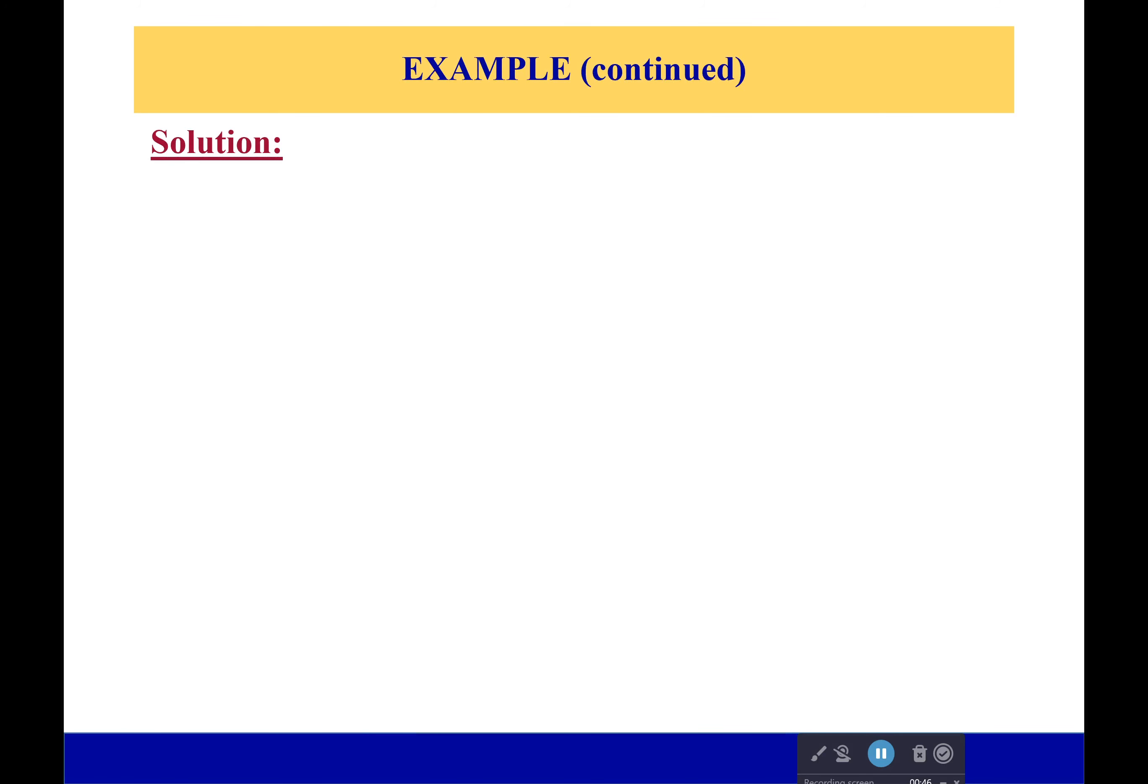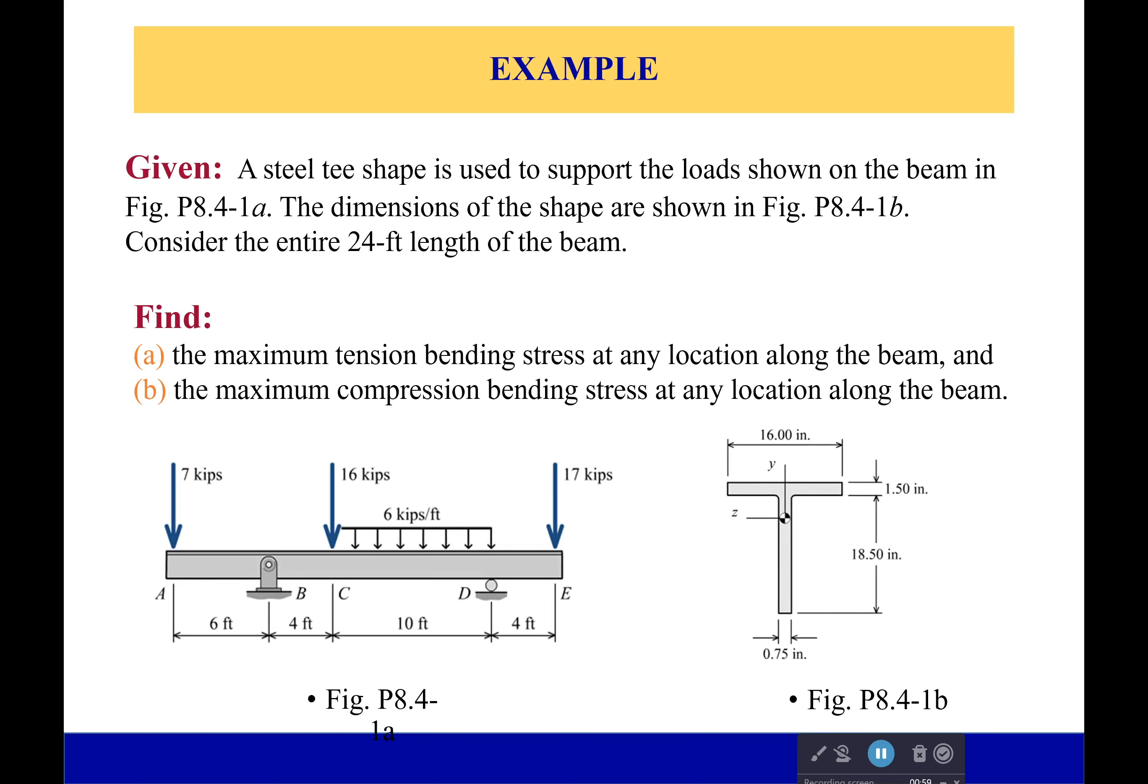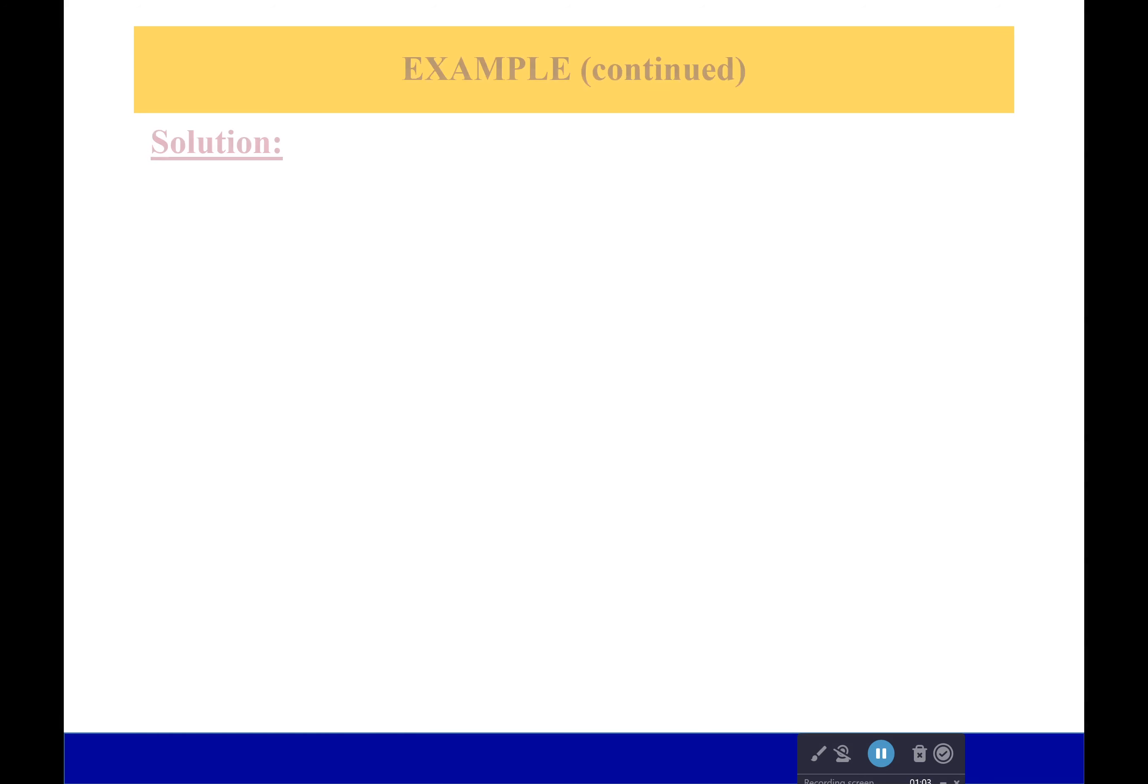Let's go ahead and jump right into this problem. You can see this is kind of combining what we learned in Chapter 7 and Chapter 8. The first thing we need to figure out is what is the centroid location in the y direction. We go back to this shape where we have the T-shape. We've got a nice wide flange on the top and then we have the stem, so it'll be two easy shapes to work with.